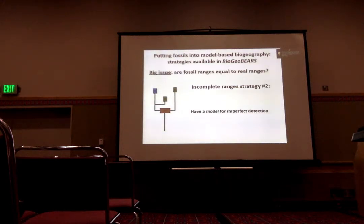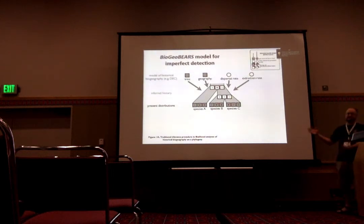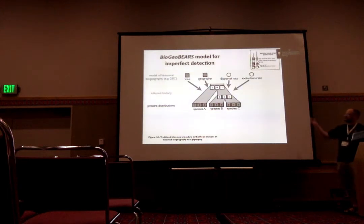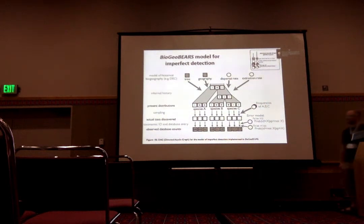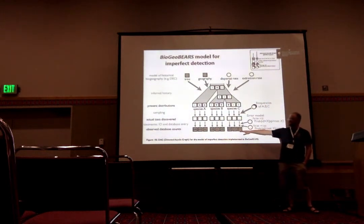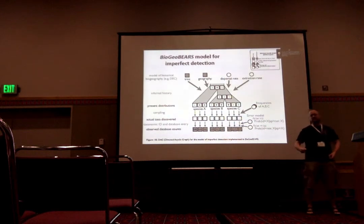I think a better strategy is to have a model for imperfect detection. Here's a standard phylogeny analysis represented as a directed acyclic graph: you have a phylogeny, geographic data in the dark gray boxes for each species, and you do ancestral state inference under some model with certain model parameters. We can change this so that observations are counts of occurrences of each species, along with counts of what I call a taphonomic control — a bunch of other fossil data that is approximately equally detectable.